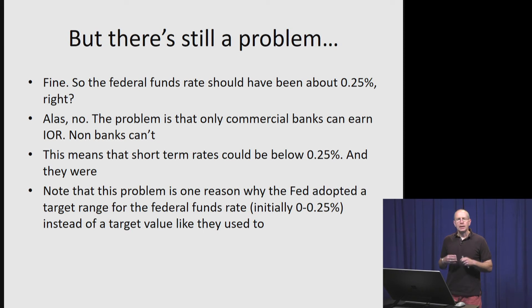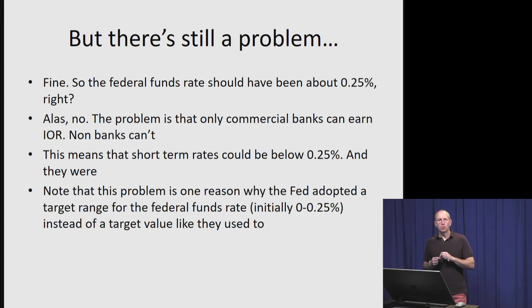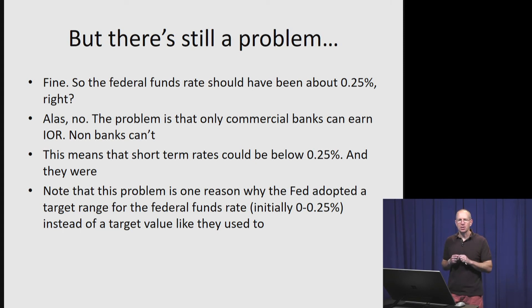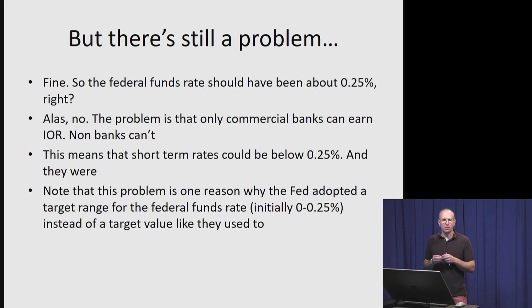There's still a problem. According to the previous graph, the intersection of supply and demand suggests the federal funds rate ought to be about 0.25%. But it actually wasn't 0.25%, because only banks can claim interest on reserves — the Fed pays the 0.25% only to banks. Non-banks didn't have that opportunity, which is why other short-term interest rates tended to fall below that quarter percent. This is why the Fed, instead of having a single target value for the federal funds rate as before, adopted a target range — for example, their initial zero to a quarter percent.